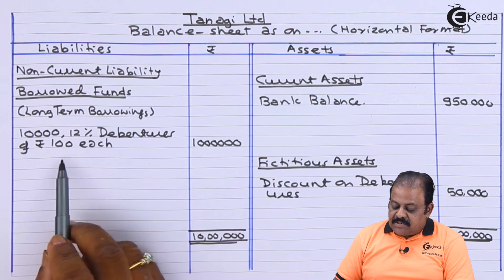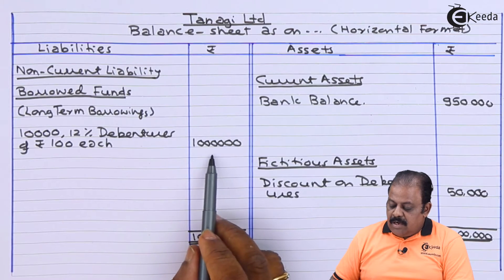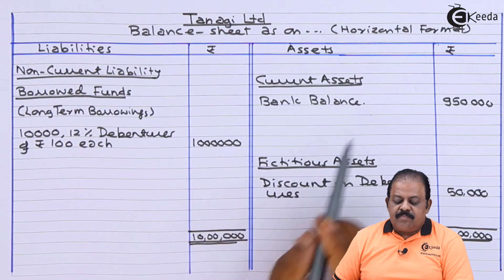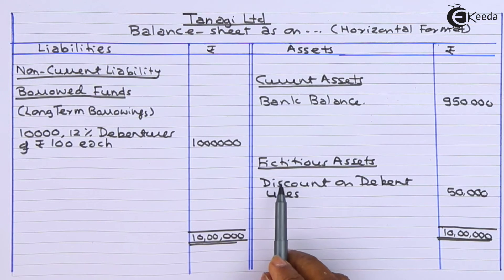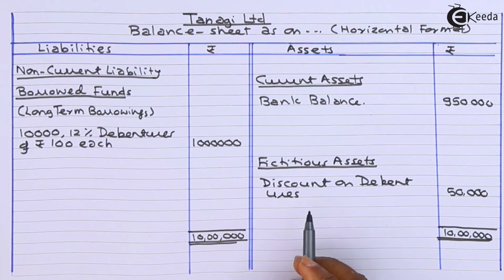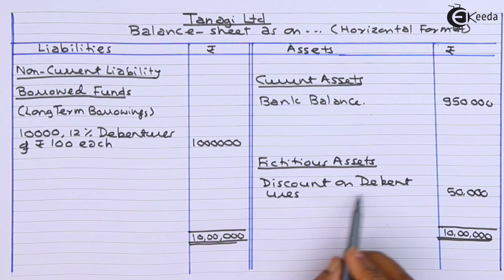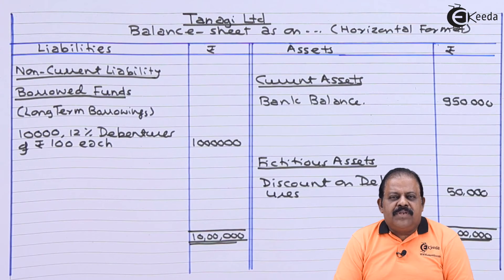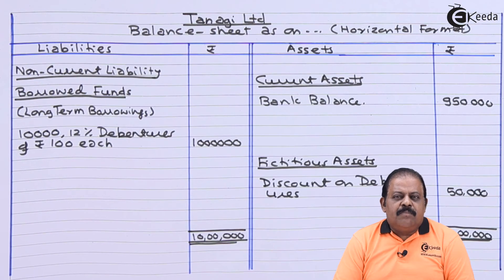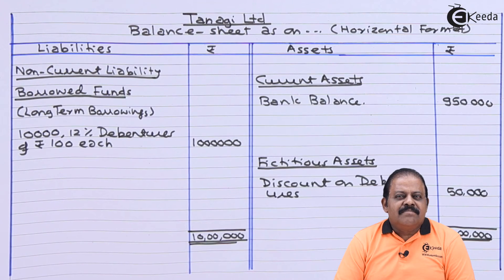On the asset side: current assets — bank balance 9 lakhs 50,000; fictitious assets or miscellaneous expenditure — discount on debentures 50,000. Total assets: 10 lakhs. Discount on debentures is a loss for the company which is written off over a period of time against the profits of the company. Thanks for watching this video — stay tuned with Ikeda and subscribe to our channel.